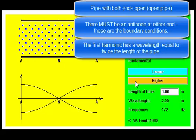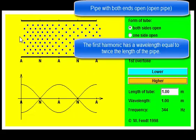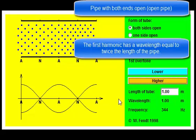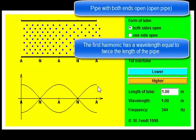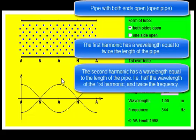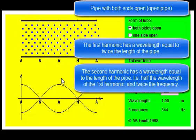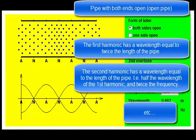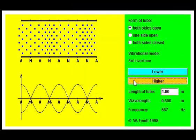The higher harmonics also have to satisfy the condition of having an antinode at either end. In the second harmonic we have more nodes in between and an antinode in the middle as well — a full cosine wave in the pipe, so the pipe length is exactly one full wavelength. This means the wavelength is halved and the frequency has doubled. Similarly, the third harmonic has a wavelength that is one third of the original, giving three times the original frequency, and so on for higher harmonics.